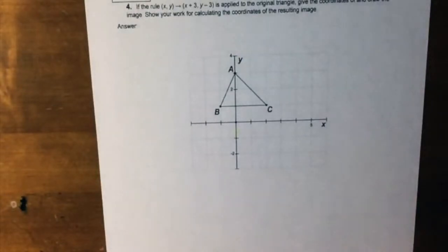If the rule (x,y) is moved to (x+3, y-3) is applied to the original triangle, give the coordinates of and draw the image. Show your work for calculating the coordinates of the resulting image. So this is pretty simple really.